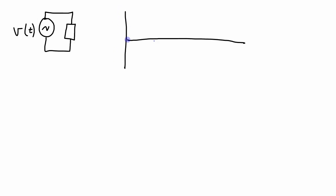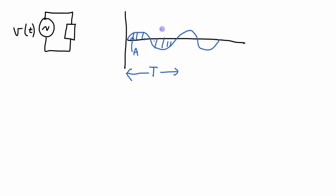What about sinusoidal voltage? A sinusoid repeats itself over and over. Over one period it spends equal time above 0 and below 0. We look at the area under the curve divided by the total time T. The area above zero is positive A, and the area below zero is negative A. Adding them up over one time period gives A plus negative A, which equals zero. So the average voltage of a sinusoid is 0.